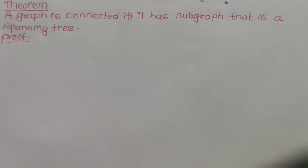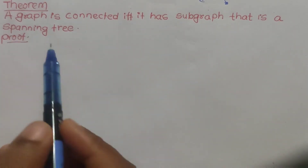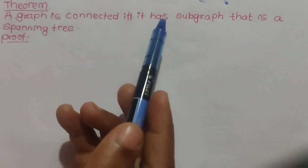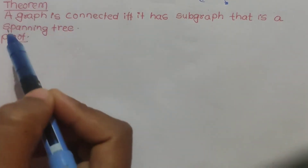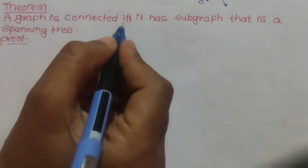Hello everyone. I am going to verify different properties, like it has n-1 edges and a single path between two vertices. Another property is: a graph is connected if and only if it has a subgraph that is a spanning tree.